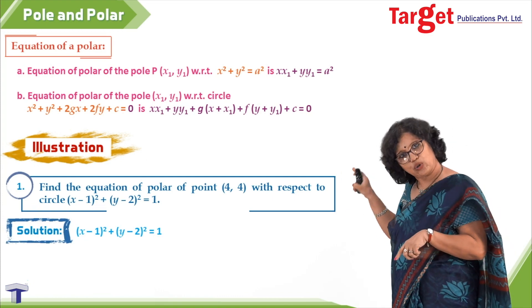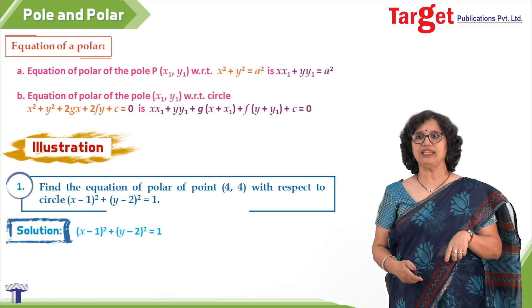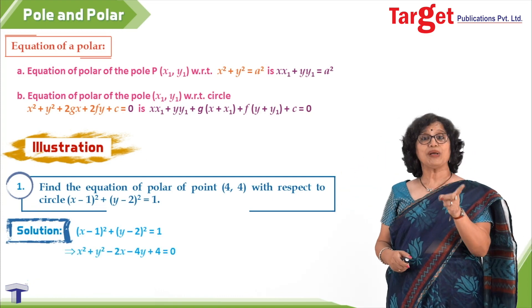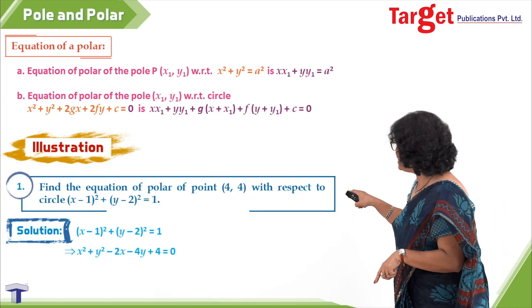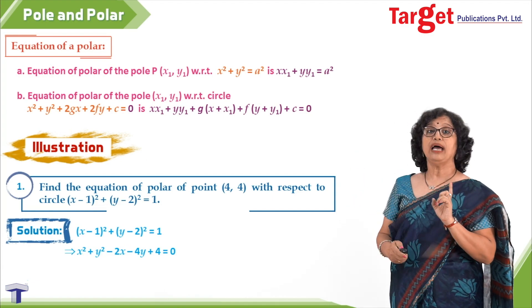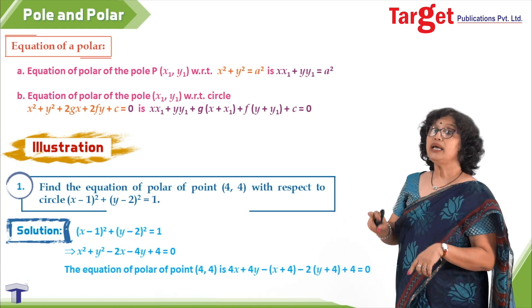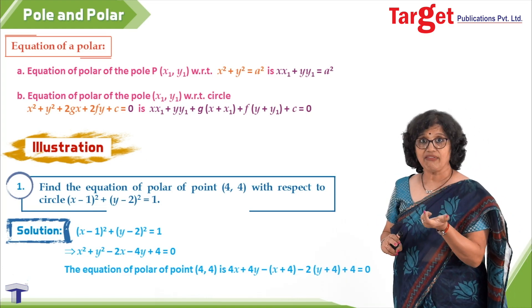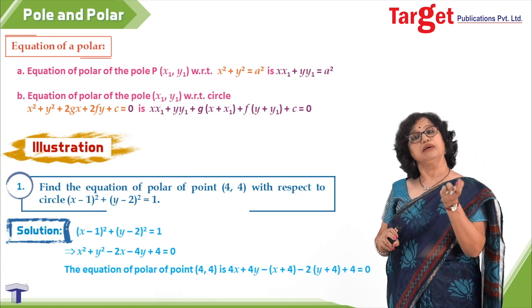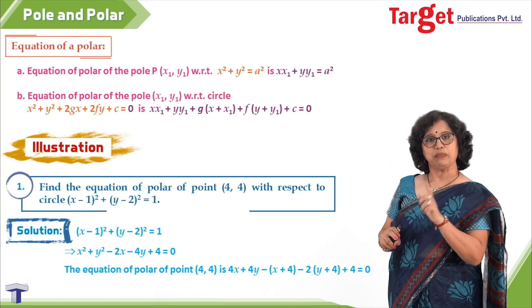I start with (x - 1)² + (y - 2)² = 1. I simplify that and I get x² + y² - 2x - 4y + 4 = 0. And then I know how to write the equation of the polar. It is xx₁ + yy₁ + g(x + x₁) + f(y + y₁) + c = 0.